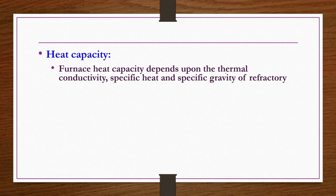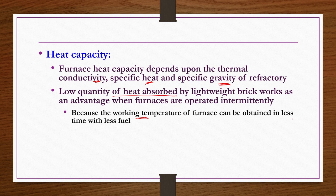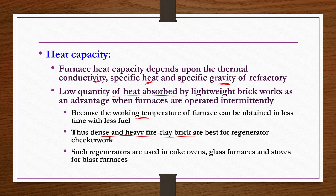Thermal conductivity is not critically important, but the densest and least porous bricks have the highest thermal conductivity. For muffled furnaces, thermal conductivity is important to consider. Insulation is designed in special refractories only. The last important physical property is heat capacity — furnace heat capacity depends upon thermal conductivity, specific heat, and specific gravity of refractory. Dense and heavy fire clay bricks are best for regenerator checker work refractories, used for coke ovens, glass furnaces, and steel making.